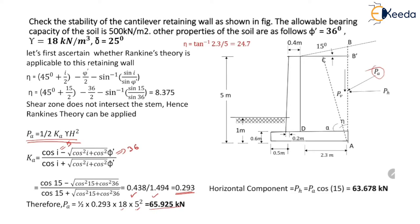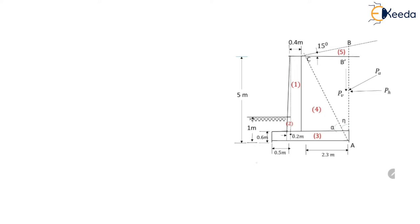The horizontal component of PA is PH which equals PA cos 15, so PH equals 63.678 kN. The vertical component of PA is PV which equals 17.063 kN.